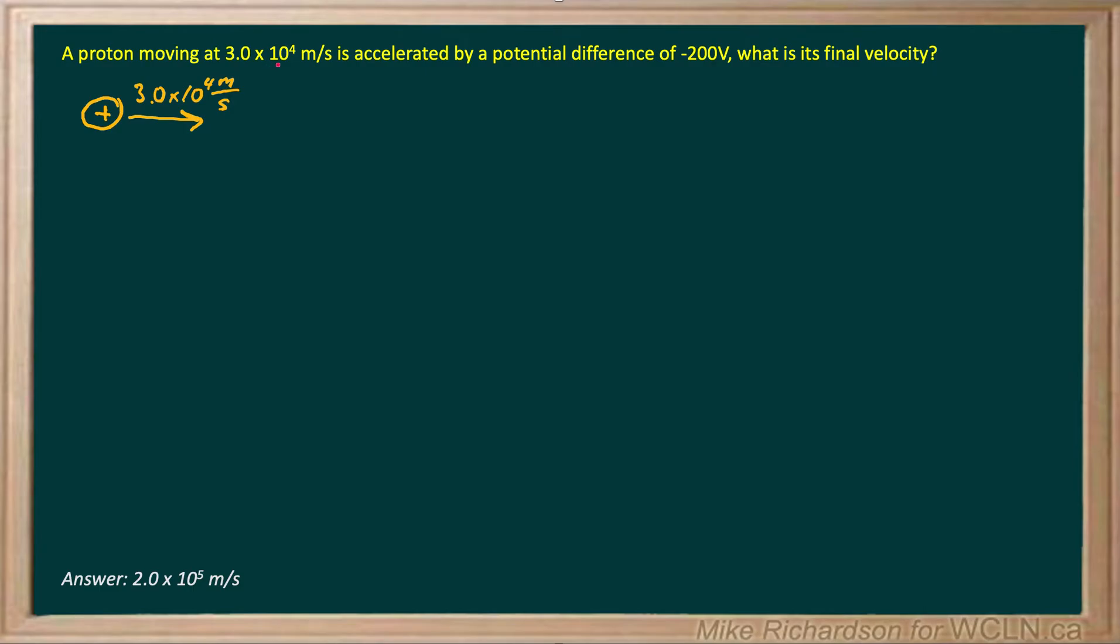A proton moving at 3 times 10 to the 4 meters per second is accelerated through a potential difference of minus 200 volts, and we want to know what the final velocity is.